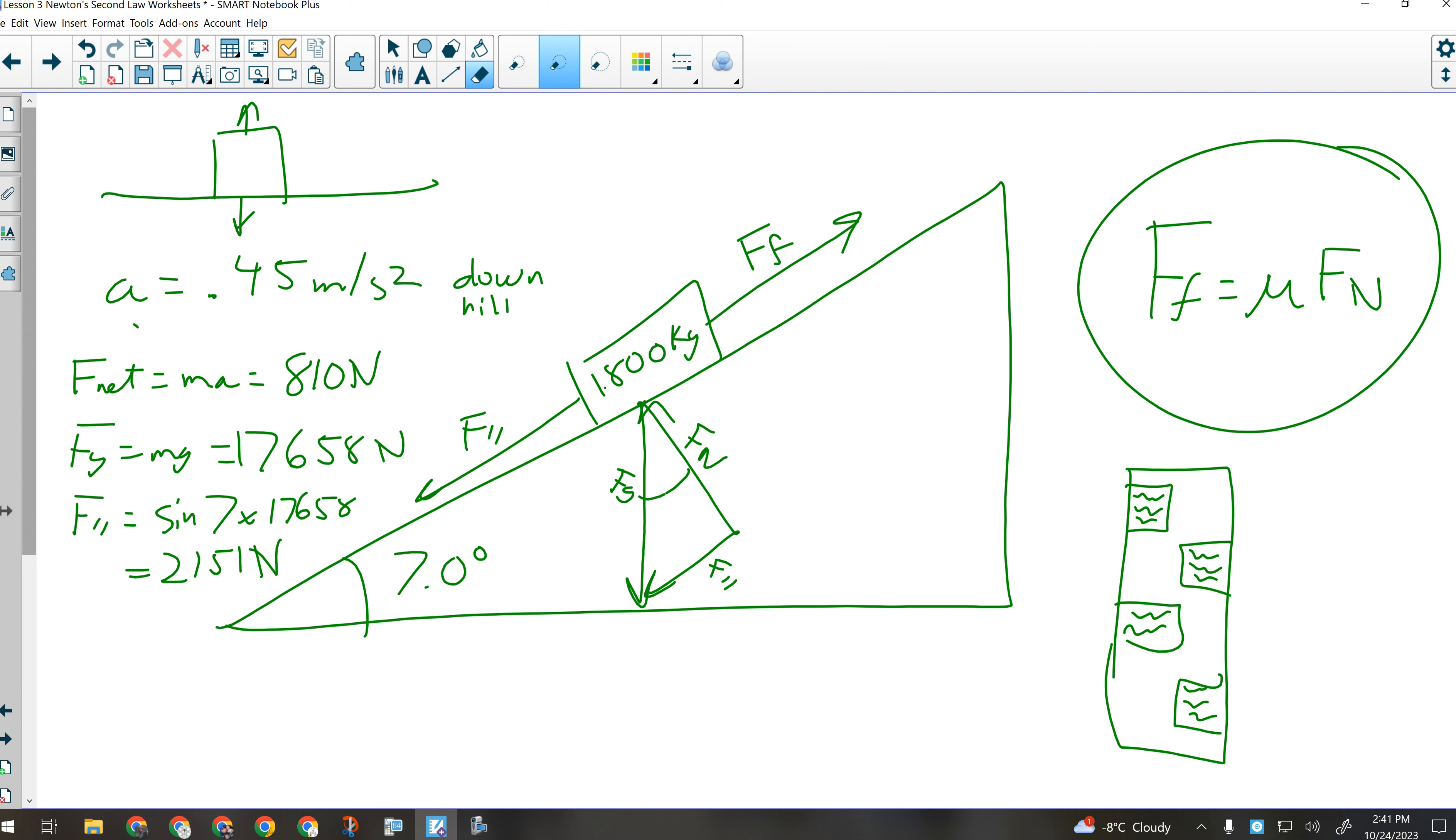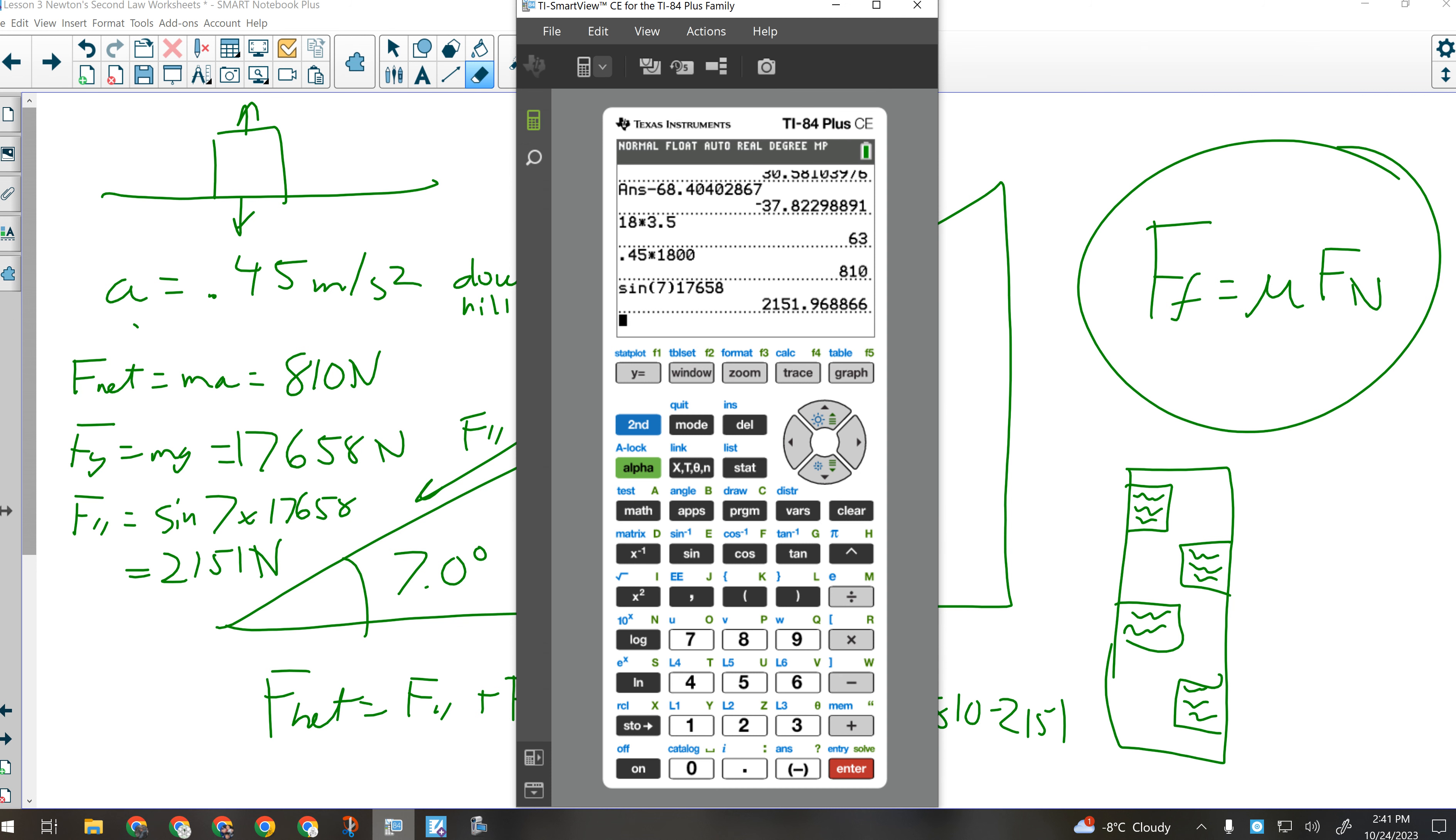Can I calculate the force of friction now? Vector sum of all forces. So F net is going to be F parallel plus the force of friction. So the force of friction will be F net minus F parallel. So 810 minus 2151. That gives me a force of friction of 1.3 times 10 to the 3 Newtons.